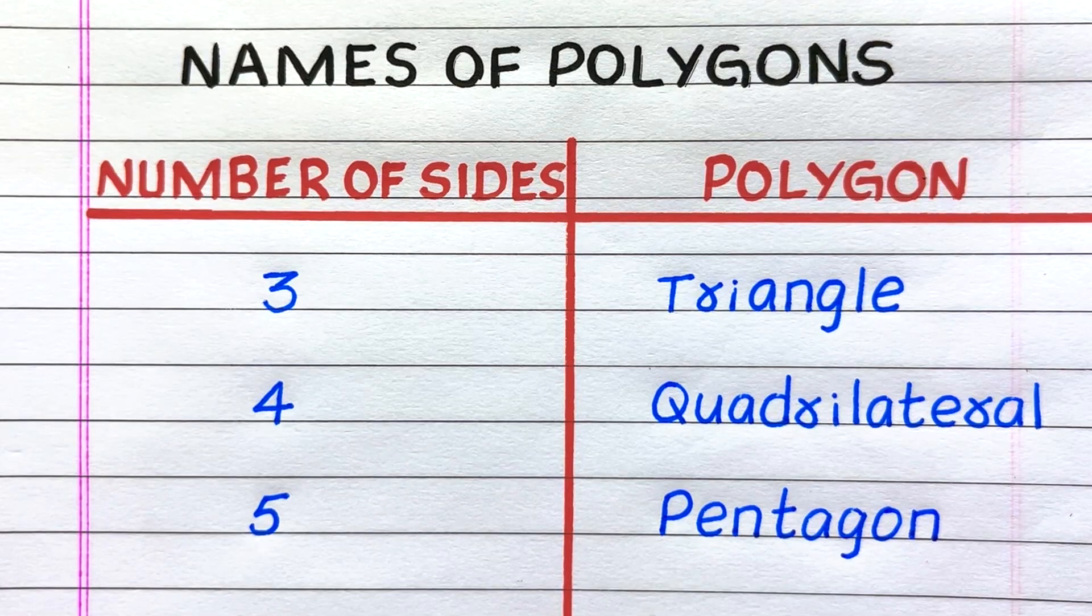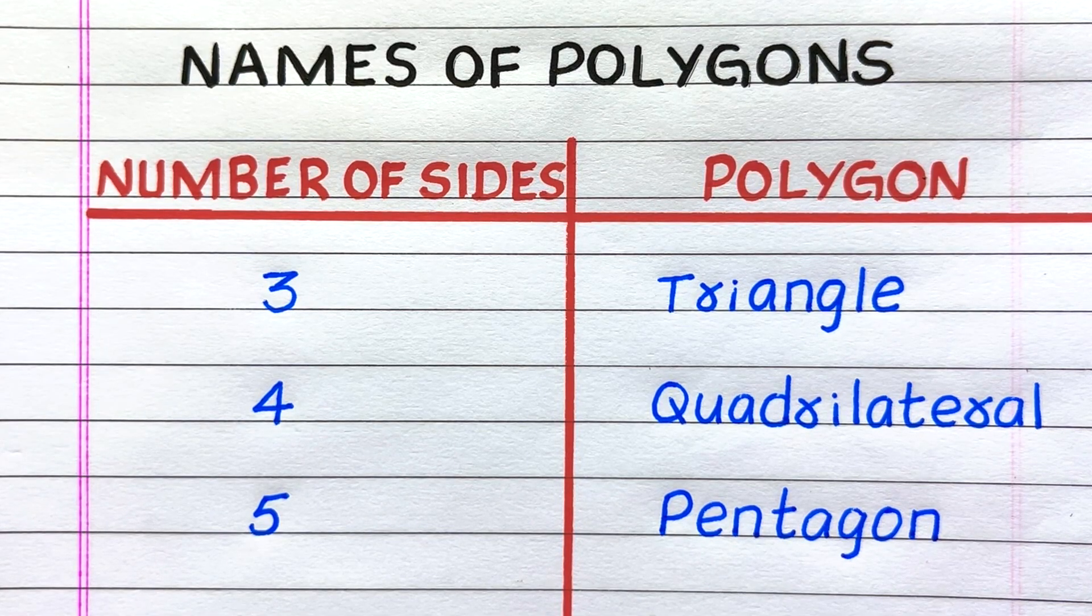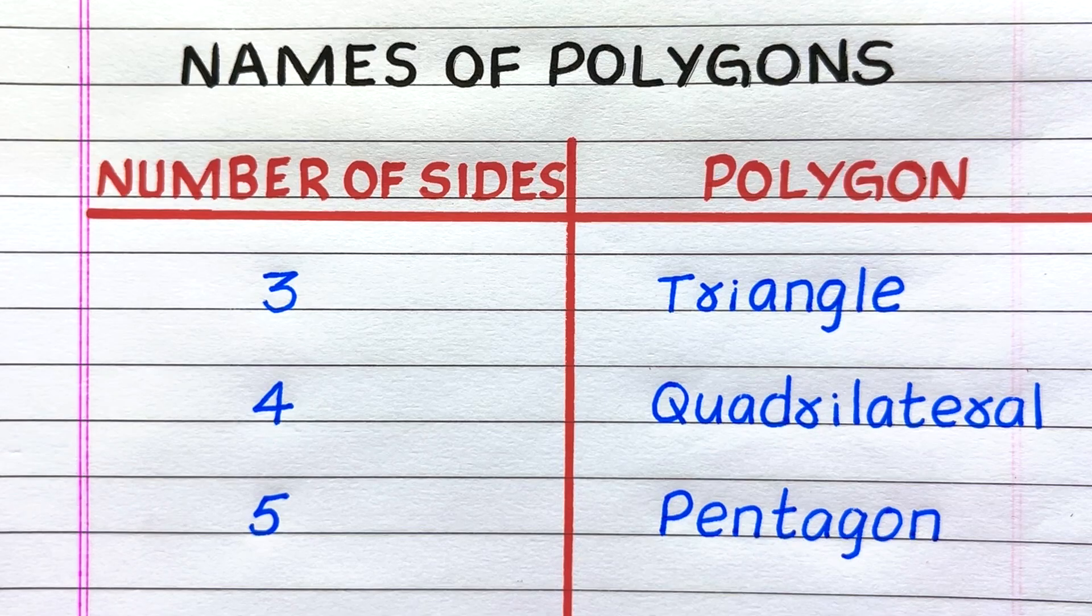A polygon with three sides is called triangle, four sides quadrilateral, five sides pentagon.